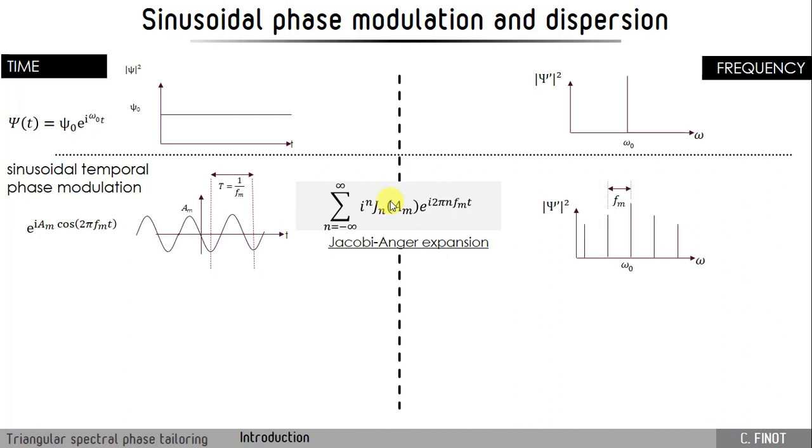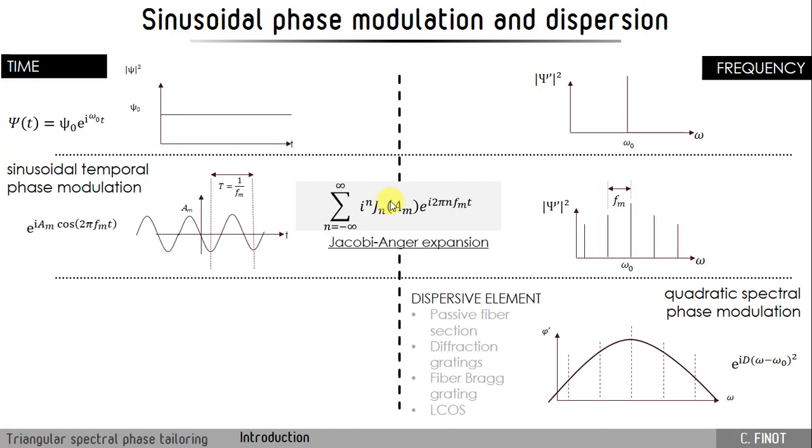For the moment, in the intensity profile, we have nothing. We just have a phase modulation in the temporal profile, and to convert this phase modulation into amplitude modulation, we use a dispersive element that can be a passive fiber, diffraction gratings, fiber Bragg gratings, and with this dispersive element, it will apply a quadratic spectral phase modulation, and with this, it will convert the initial phase modulation into a temporal modulation of the intensity profile.